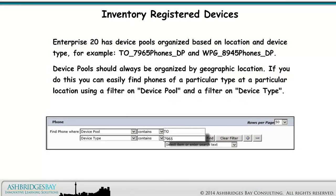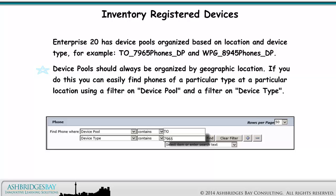Enterprise 20 has device pools organized based on location and device type — for example, Toronto 7965 phones device pool and Winnipeg 8945 phones device pool. Device pools should always be organized by geographic location. If you can do this, you can easily find phones of a particular type at a particular location using a filter on device pool and a filter on device type.